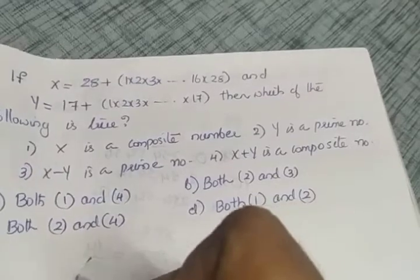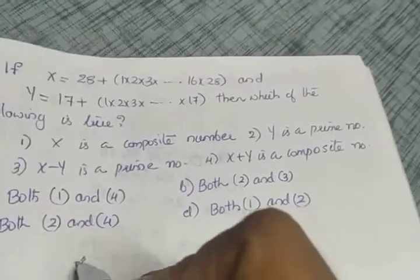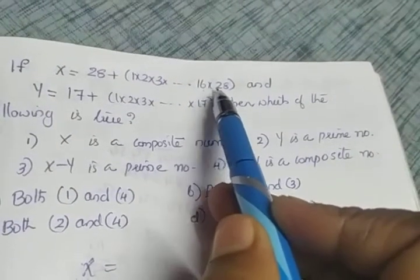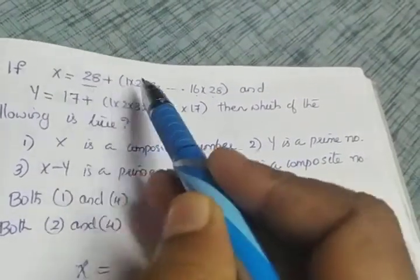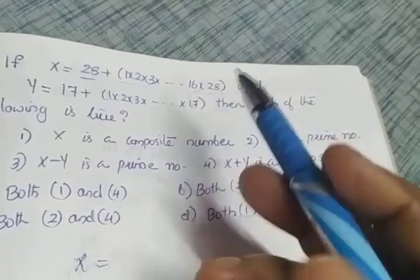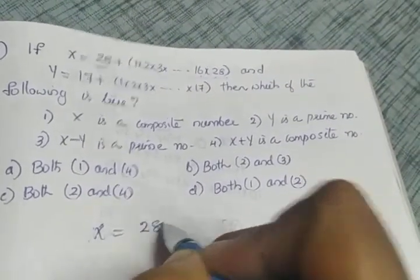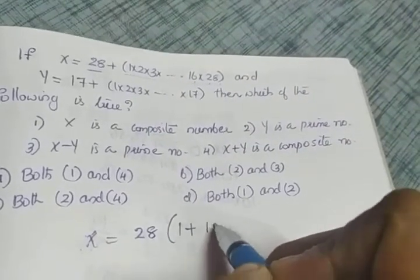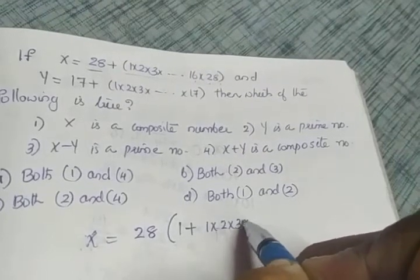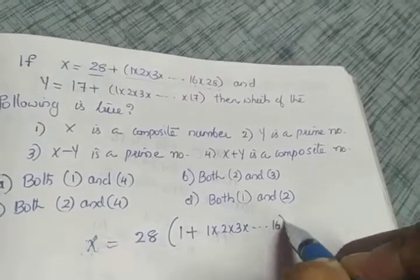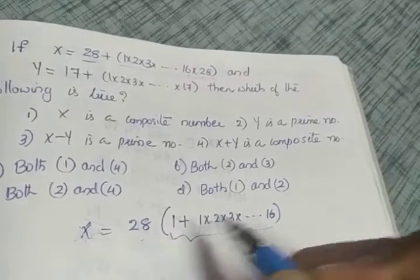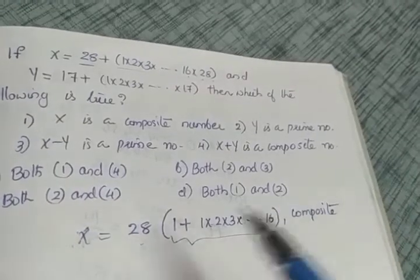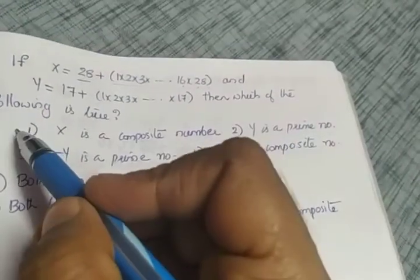For x: x is given as 28 plus 1×2×3×...×16×28. There are two terms, and 28 is common to both. Taking 28 outside, the first term leaves 1 and the second term leaves 1×2×3×...×16. So x = 28×(1 + 1×2×...×16), which is a composite number. So statement 1 is true.